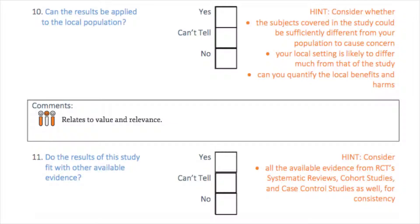Questions 9, 10 and 11 on the CASP checklist relate to the believability of results. The believability of results can be assessed by considering factors such as confounding or bias, and it is also important to consider whether the results may have been affected by chance. Assessing the believability of results requires judgment and consideration of factors such as the biological plausibility of the relationship between exposure and outcome, and the contextualisation of the case control study in the wider body of research in the field.